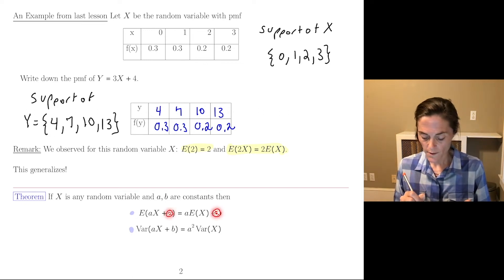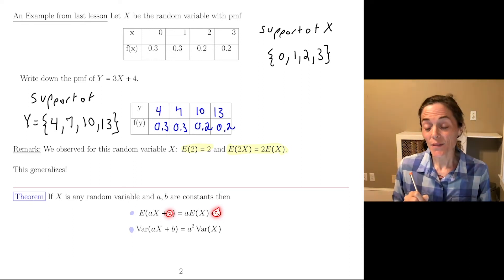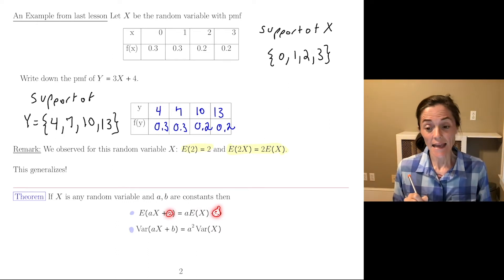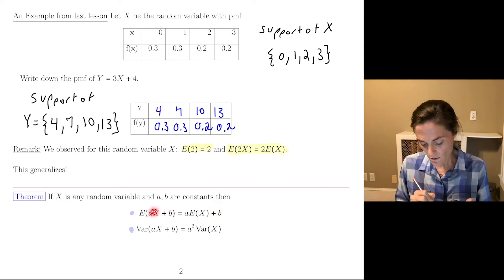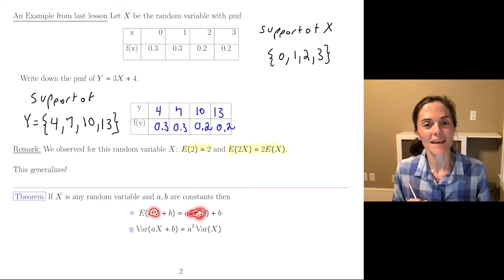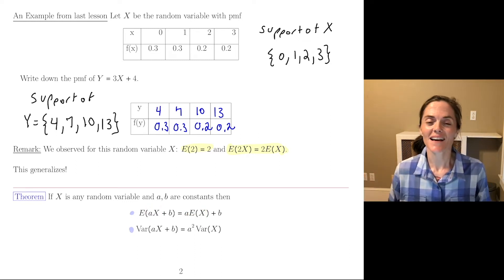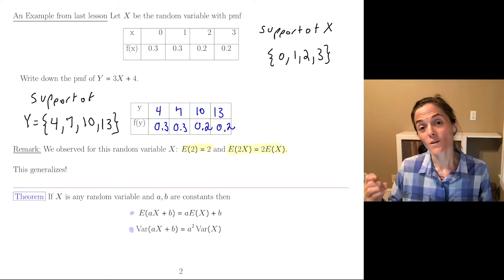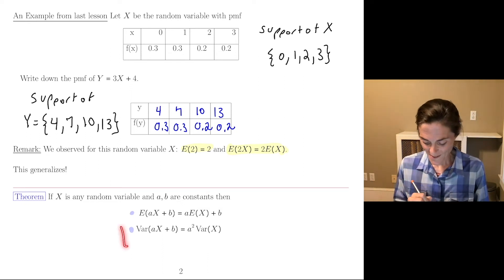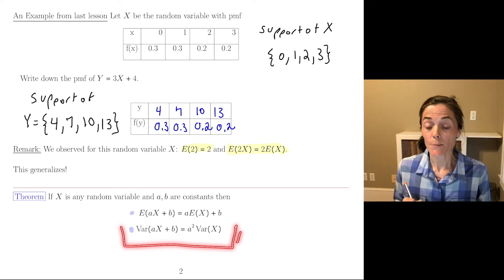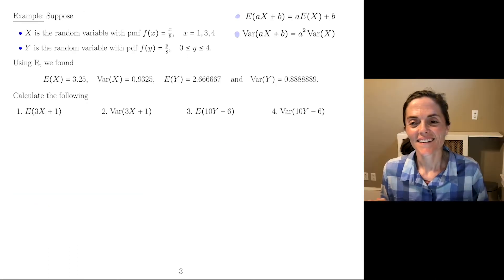The expected value of AX plus B is A times the expected value of X plus B. Let's think about this one before I mention the statement for variance. You see if B is 0, expected value of AX is A times expected value of X. That looks very much like something I wrote down in the last lesson. And similarly, if little a was 0, the expected value of B is B. I also wrote this down in the last lesson. So either one of these, expected value or variance, you could justify using algebra. Moreover, both hold for both discrete random variables and continuous random variables.